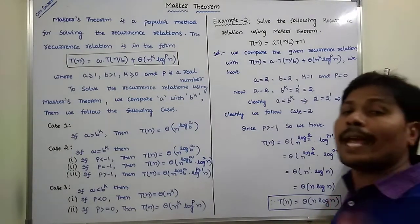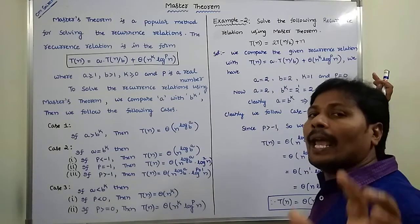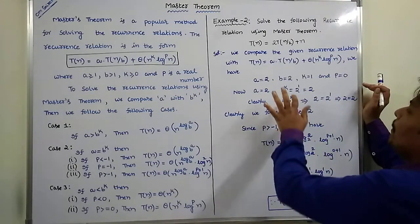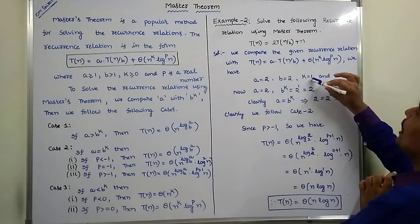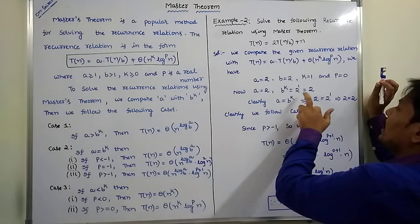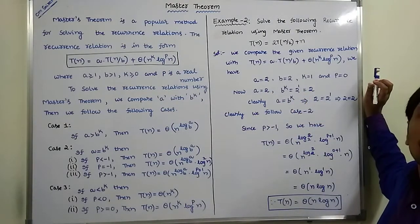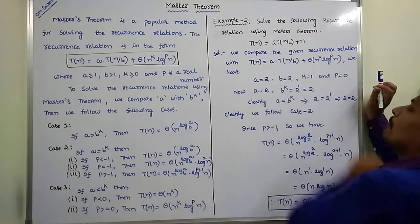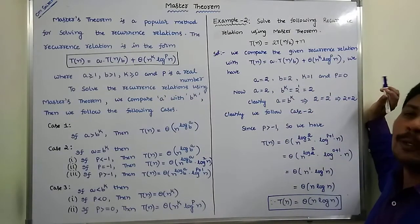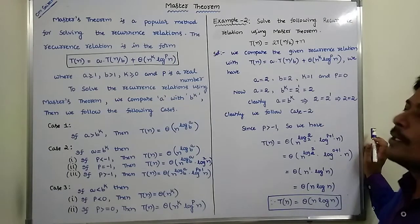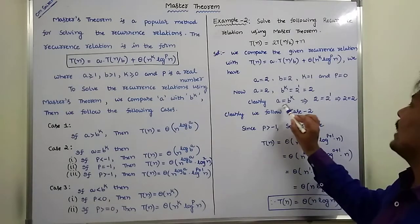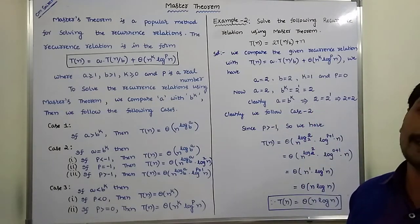Now we have to check the relation between A and B^k. Here A value is 2, B^k is 2^1 which equals 2. So the relation between A and B^k is: A = B^k, that is 2 = 2^1 = 2. Therefore, A is equal to B^k.